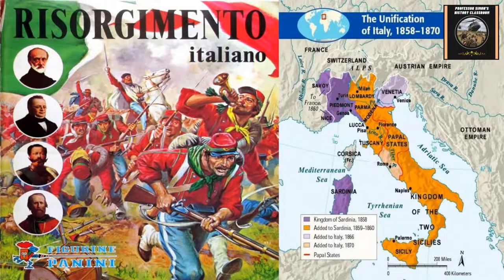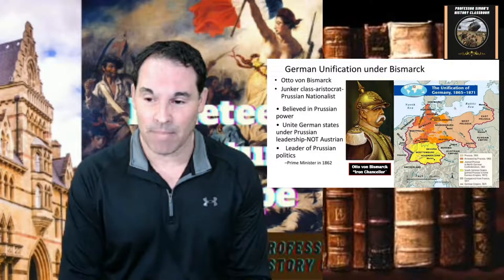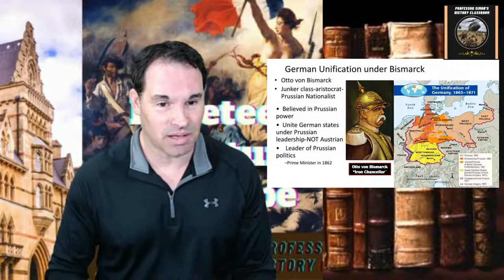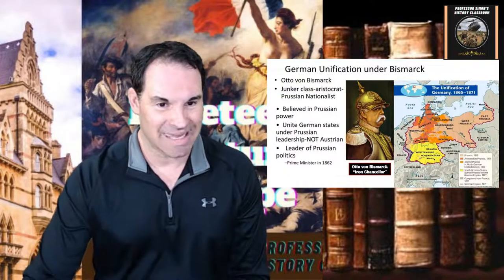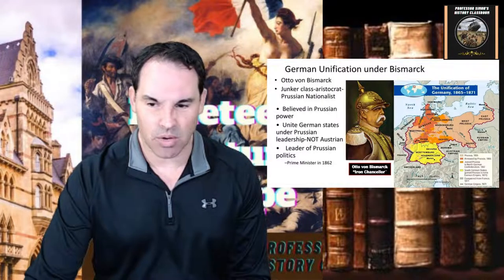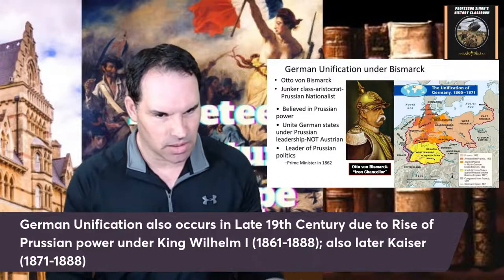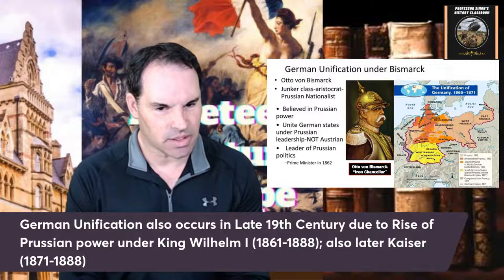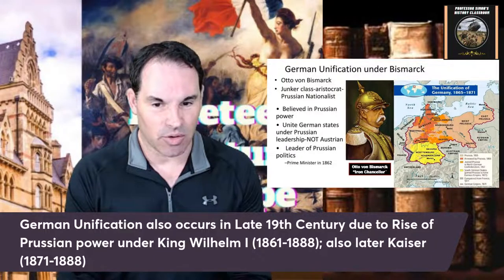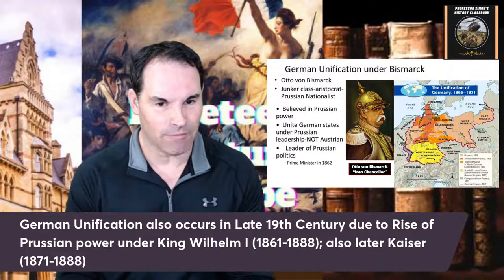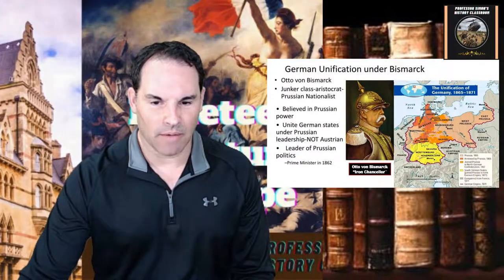German unification was the other major issue that changed Europe drastically — it changed the whole balance of power. German unification began really under Prussia, the major power that caused the unification of the German state. This occurred under Wilhelm I, later called Kaiser. We'll talk mainly about Otto von Bismarck, who is really the major figure — the brains behind the unification of Germany.